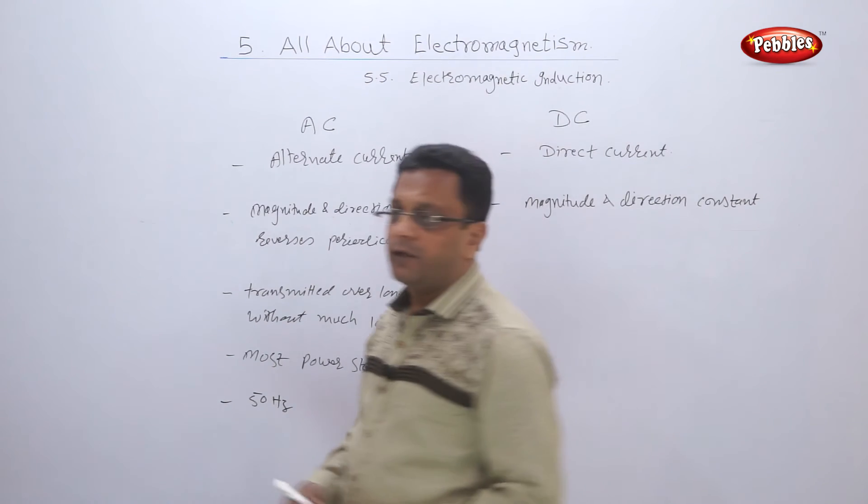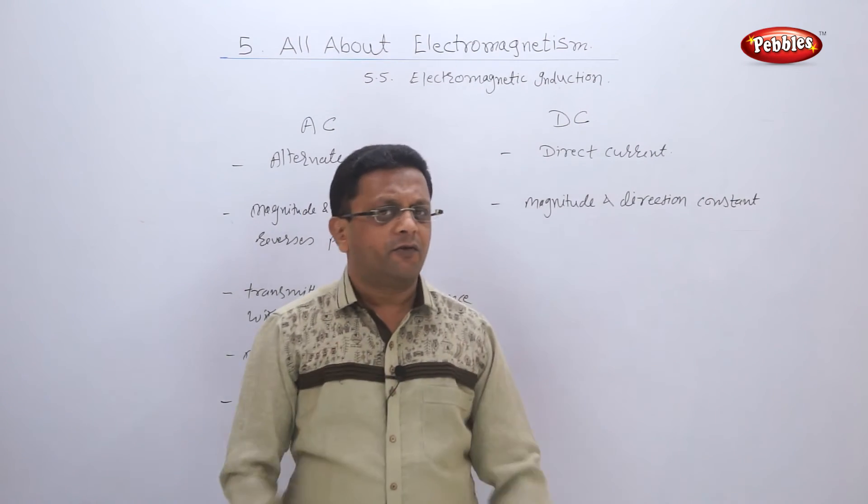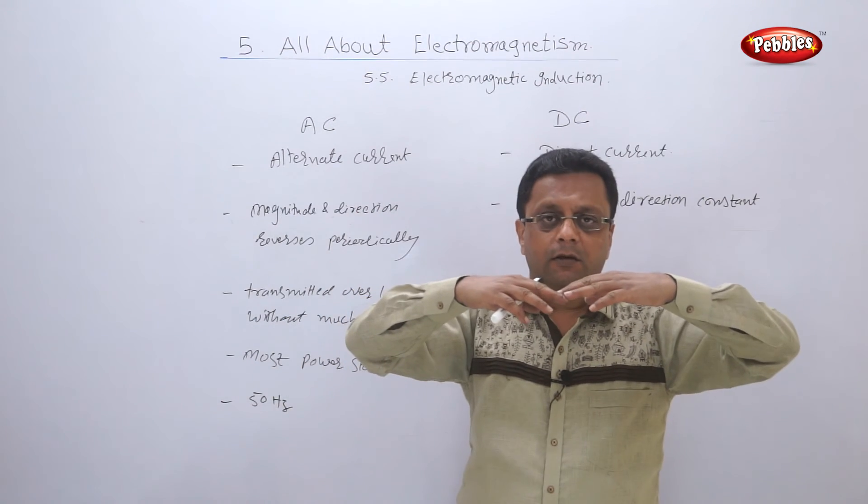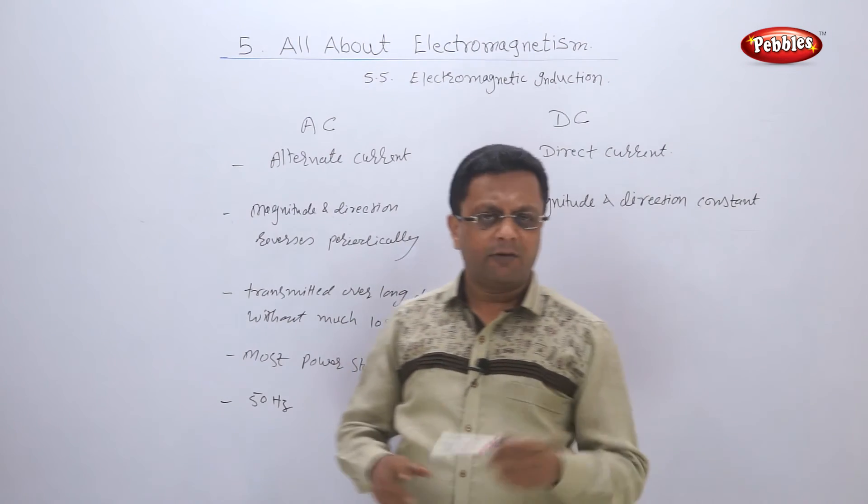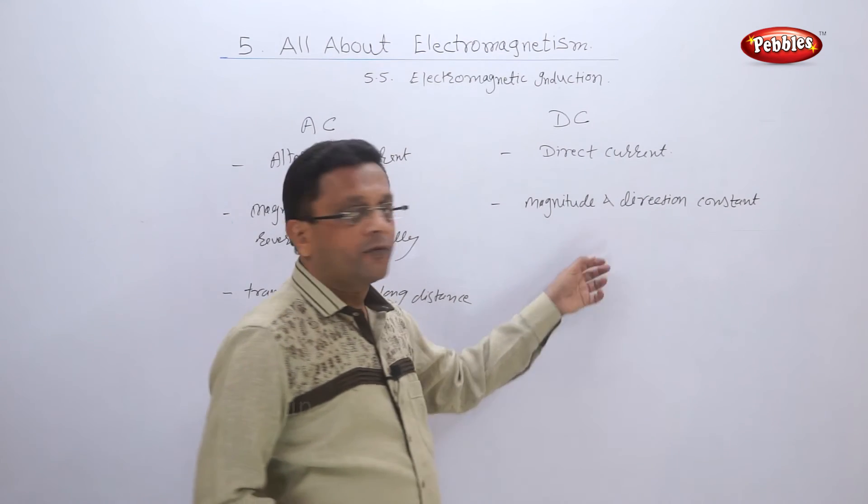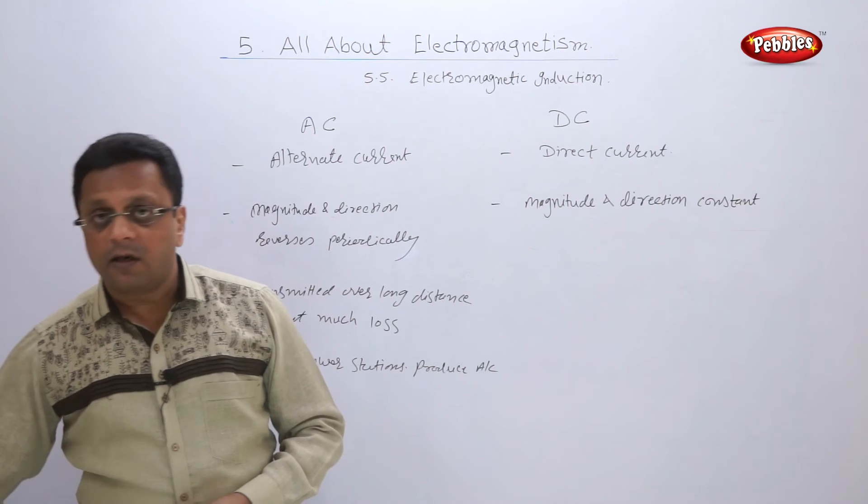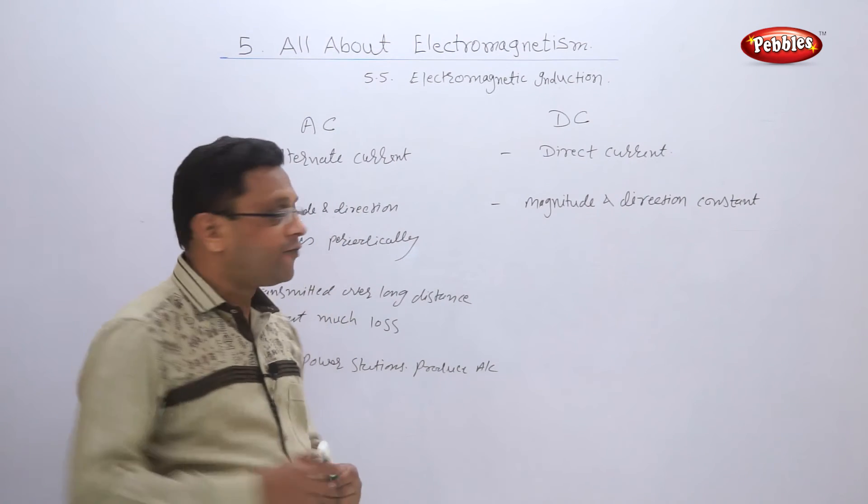DC current is difficult to carry. If you have a cell and attach a very long wire to it with a bulb, the bulb will not glow because there is too much loss when DC current flows through any conductor.